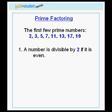Now let's learn some tricks. A number is divisible by 2 if it is even — in other words, if it ends in 2, 4, 6, 8, or 0.